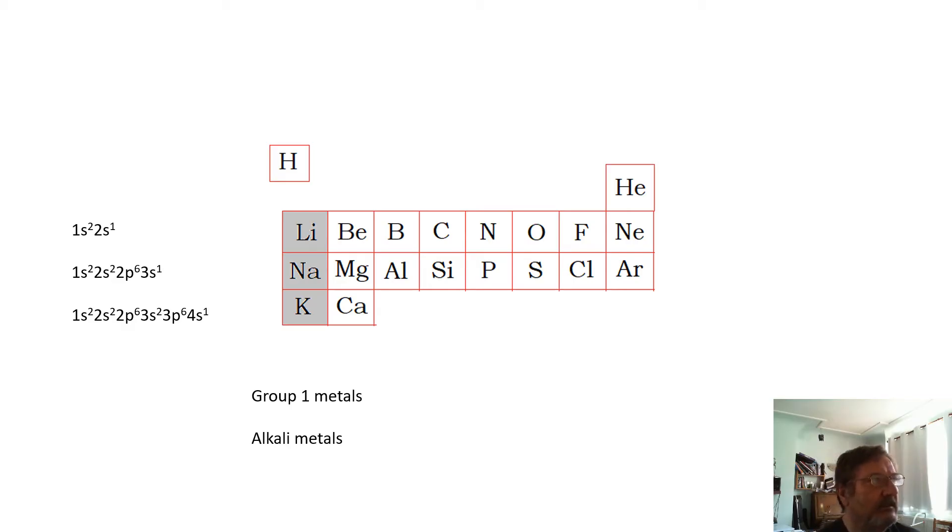One interesting thing about them is, if you look at this—this is called the electron configuration—the interesting thing here is that they have one electron in their outer shell. One electron there: 2s1, 3s1, 4s1. They have one electron in their outer shell. As you go down, they get more reactive. The group one metals.